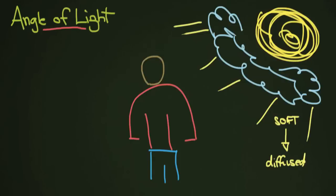Now you're also going to be able to light him with something really small. So maybe you have a lamp, and it's very close to him — maybe like a little light bulb. And the light coming off of that is very small and very directional. This is what's called hard or harsh light.